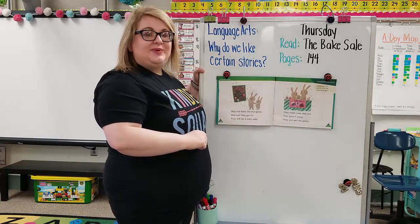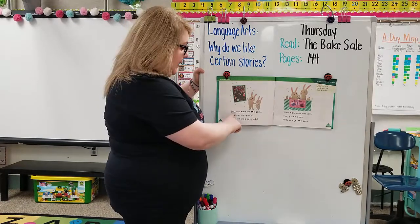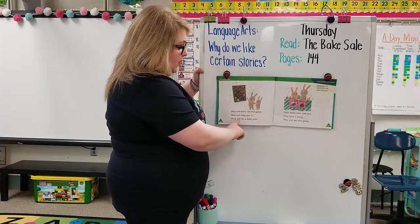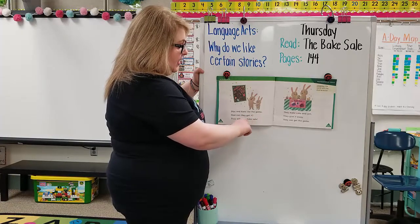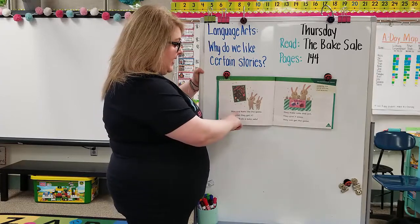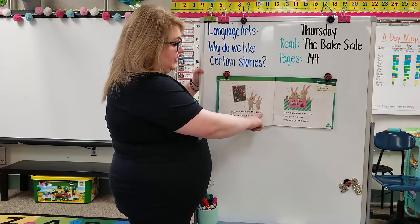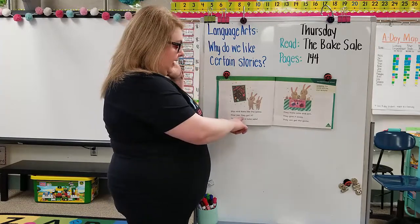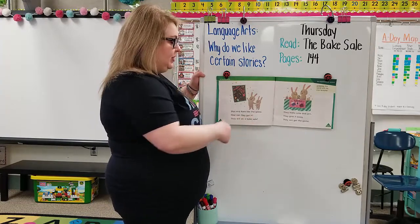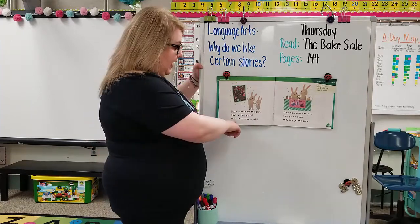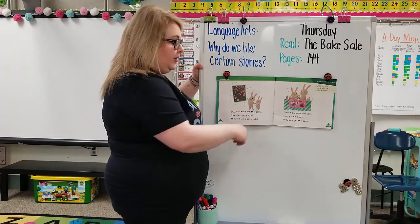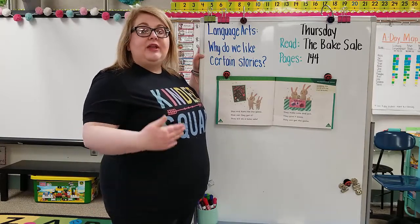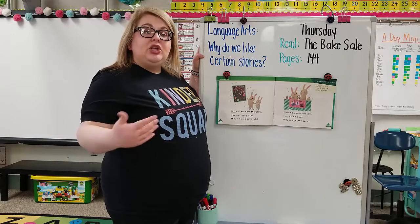Reading — if you're ready, point to each of those words. Max and Kate like the game. How can they get it? They will do a big sale. Let's look — we got some different punctuation marks. 'Max and Kate like the game' — there's a period, so that is a statement. They are saying they both like the game. 'How can they get it?' — there's a question. They like the game but how will they get it? 'They will do a big sale' — they're excited. They need money for the game, so they will do a big sale to earn the money.